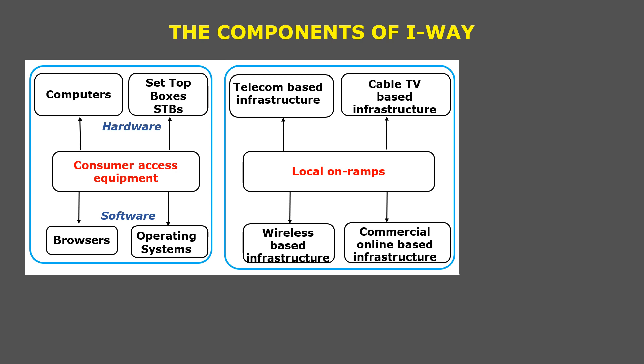The second major component is local on-ramps, which consists of four sub-components. These are the four types of providers to which people connect for broadband internet connectivity: telecom operators like BSNL, DTH service providers, wireless service providers using cellular technologies or Wi-Fi routers, and different types of commercial online-based infrastructure. These four players provide the last mile — that is, connectivity at the doorstep of consumers.